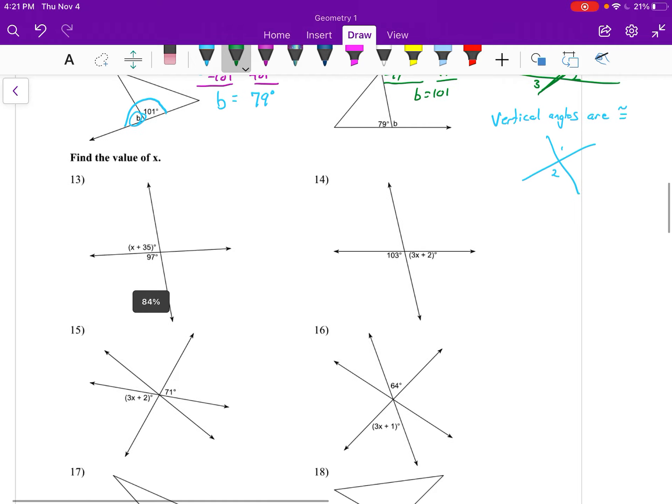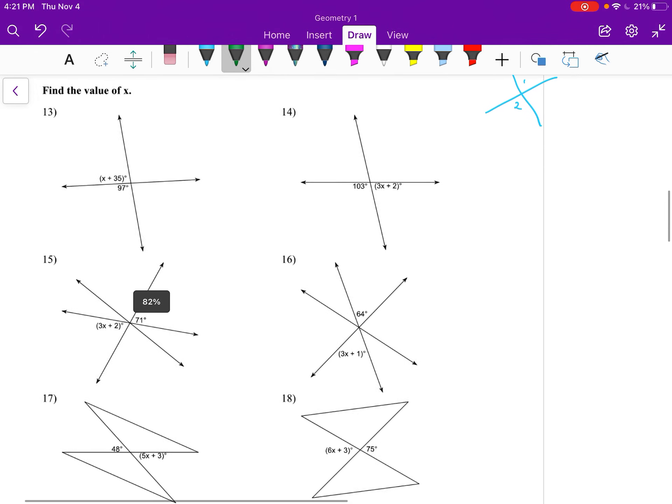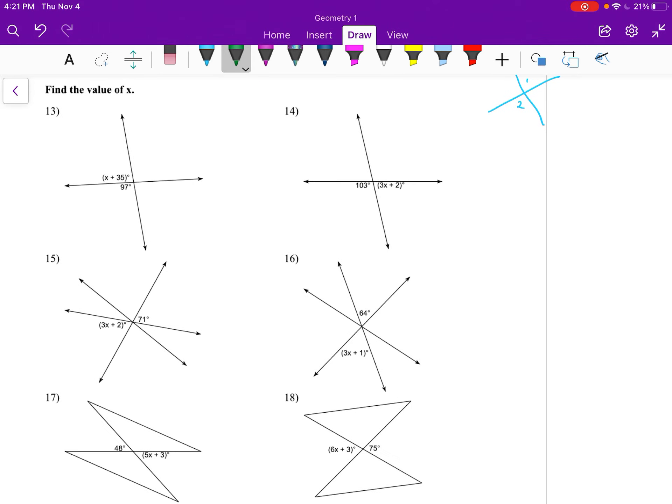Using the idea of linear pair, they add up to equal 180 degrees. On number 13 and 14, these are still linear pairs, they'll add up to equal 180, but we will have to solve a bit of an equation here.